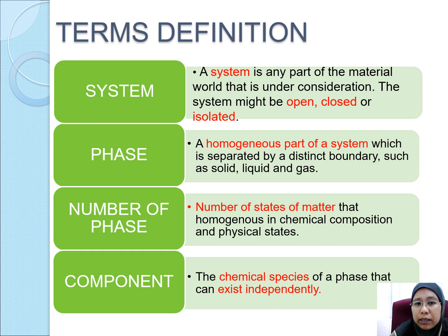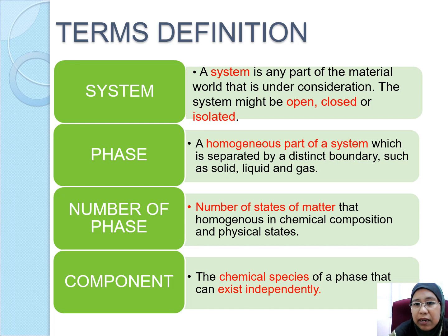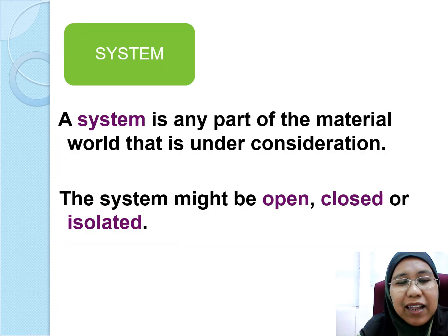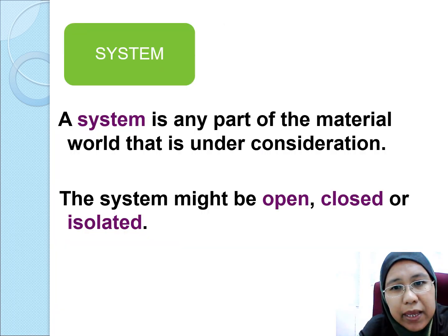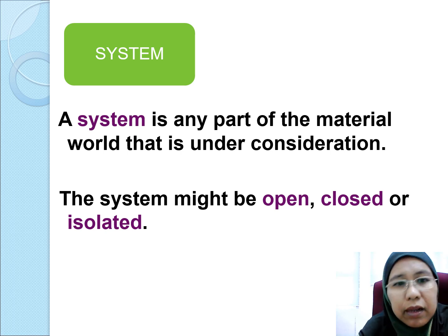The component we are referring to in this lesson is the chemical species of a phase that can exist independently. Let's look at how the system is said to be open, closed, or isolated.